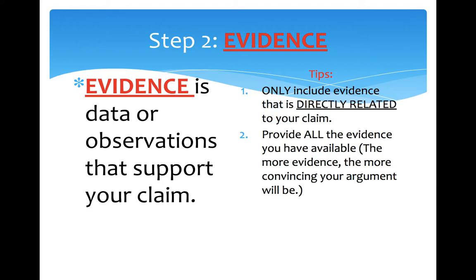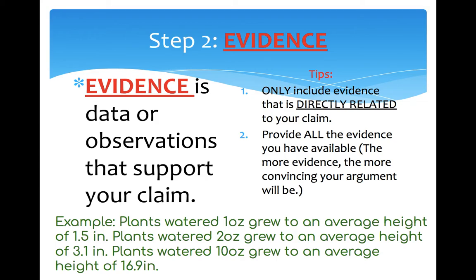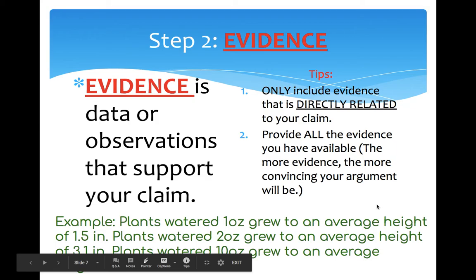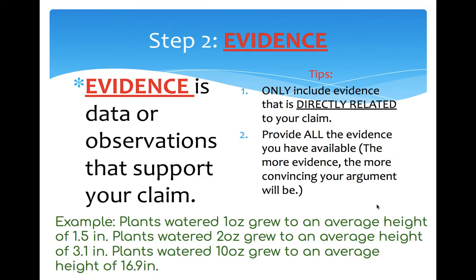The second step to writing a full scientific conclusion is evidence. In science, evidence is data or observations that support your claim. In this case, that would be the data she collected about the amount of water given to the plants and the height that the plants grew. Make sure your evidence is relevant to your claim — don't allow background information that isn't relevant to get mixed in, as it will weaken your argument. Also make sure you provide as much evidence as is available; the more evidence you provide, the more convincing the argument tends to be. For example, when she watered the plants one ounce, they grew an average height of about one and a half inches; when she watered them two ounces, they grew to an average height of 3.1 inches, and so on. The more evidence you provide, the better.